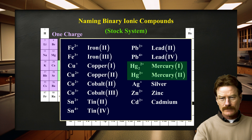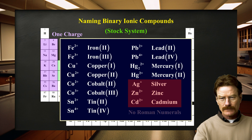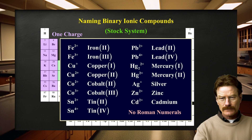Mercury is special in that it forms Hg2+ named mercury(2), and Hg2 2+ named mercury(1). It is named mercury(1) because the 2+ charge is distributed between both mercury atoms, giving each a 1+ charge. There are some transition metals that do not require Roman numerals: silver, zinc, and cadmium. Although these are transition metals, we will only work with the 1+ ion for silver, the 2+ ion for zinc, and the 2+ ion for cadmium, so a Roman numeral will not be used.